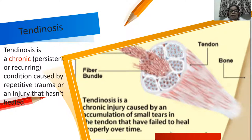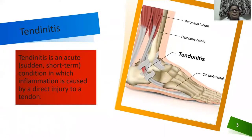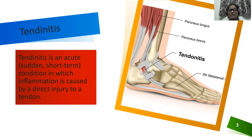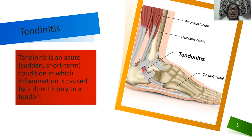Here you can see how the fiber bundle and tendon are formed in this picture. Tendinitis, by contrast, is an acute, sudden, short-term condition in which inflammation is caused by a direct injury. This is not a chronic condition — it is a sudden or short-term condition.